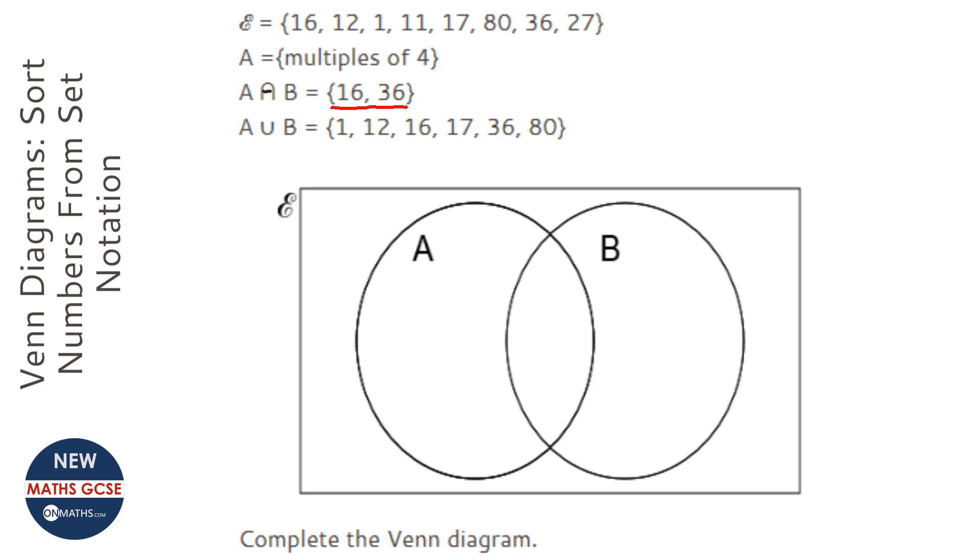A and B are the values that are in both of the circles A and B. So we can fill that in quite easily and we can cross those off as we go.